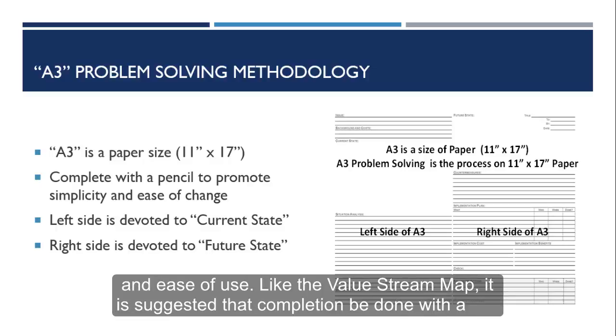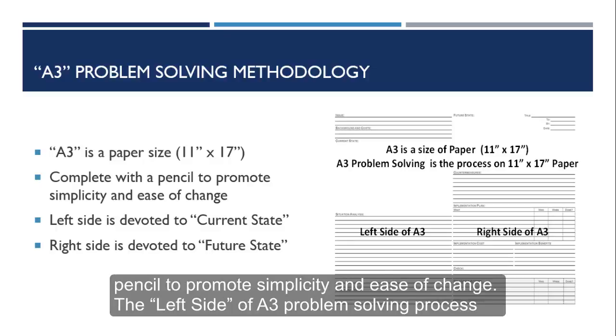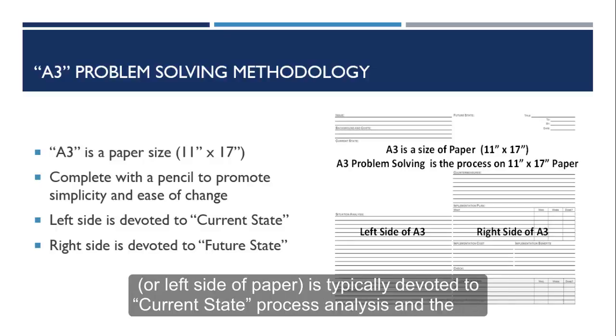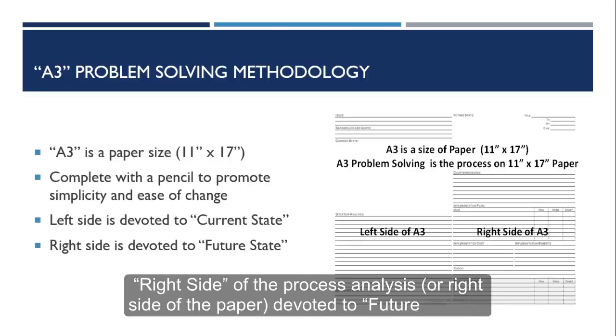Like the value stream map, it is suggested that completion be done with a pencil to promote simplicity and ease of change. The left side of the A3 Problem Solving Process, or left side of paper, is typically devoted to the current state process analysis, and the right side of the process analysis, or right side of the paper, is devoted to future state.